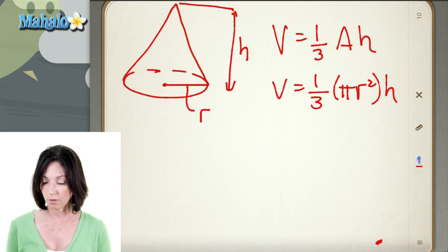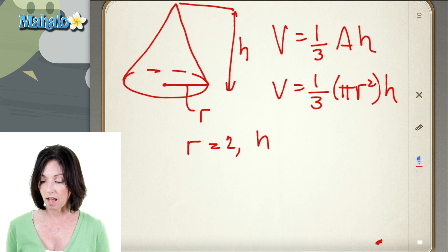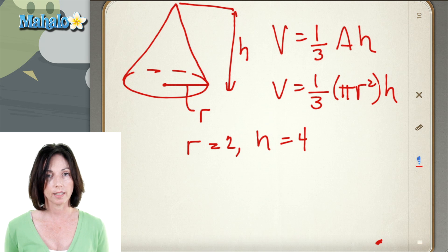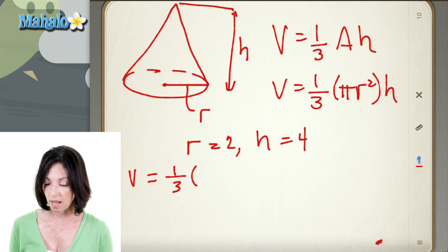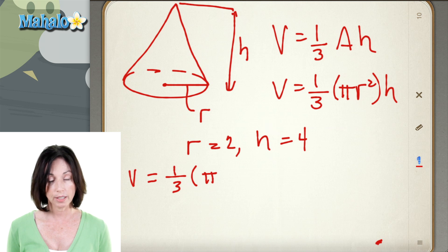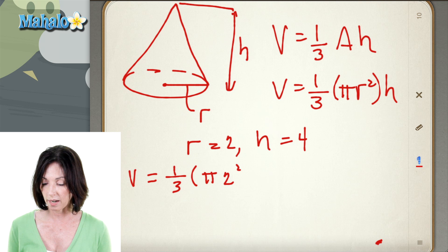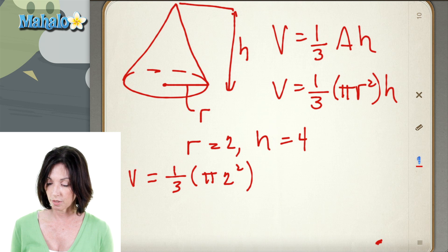So let's say our cone has a radius of 2 and a height of 4. Let's calculate the volume. So the volume is equal to one-third times pi, r is 2, so 2 squared times the height, which is 4.